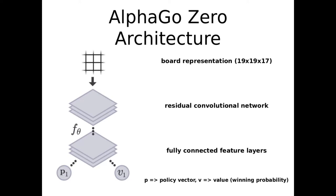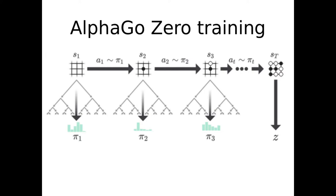The layer splits where we have a policy vector and a value function. The value function gives us a winning probability. This is also used in Proximal Policy Optimization.